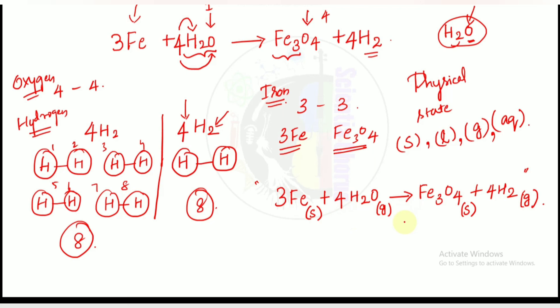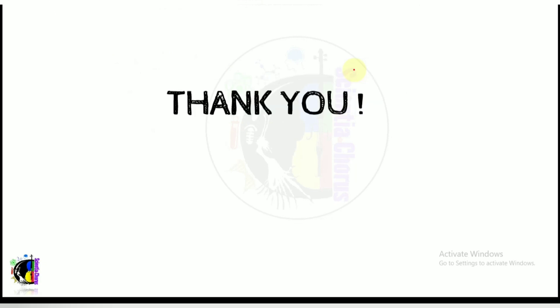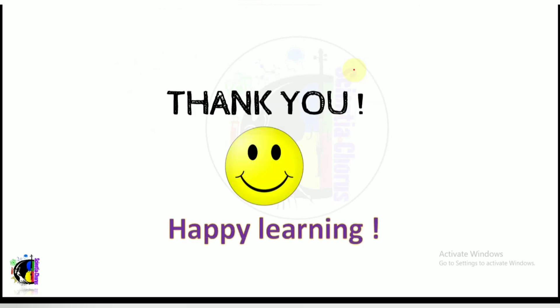Here is a challenge for you: aluminium plus oxygen gives aluminium oxide; sodium oxide plus water gives sodium hydroxide. First, write the chemical formula for each substance, then try to balance the equation, and identify the physical state of each element or compound at room temperature. Thank you all, have a great day and happy learning!